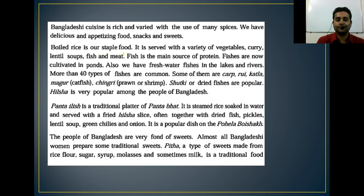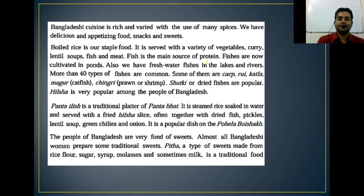Boiled rice is our staple food. It is served with a variety of vegetables, curry, lentil soup, fish and meat. So we can't eat rice only — we need different kinds of curry, vegetables, or lentil soup to eat rice. Fish is the main source of protein. The major percentage of protein comes from fish.